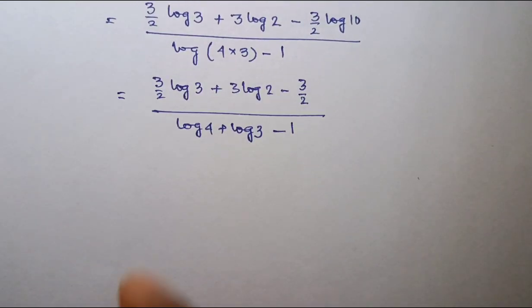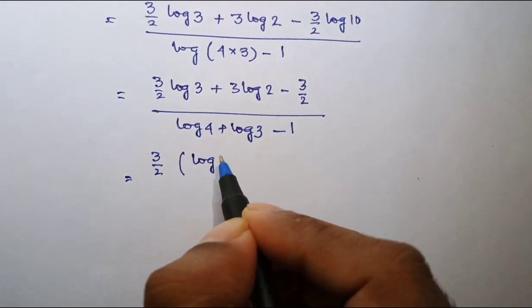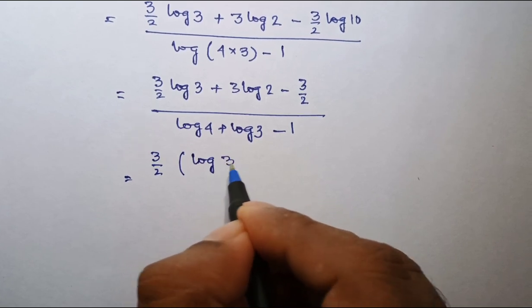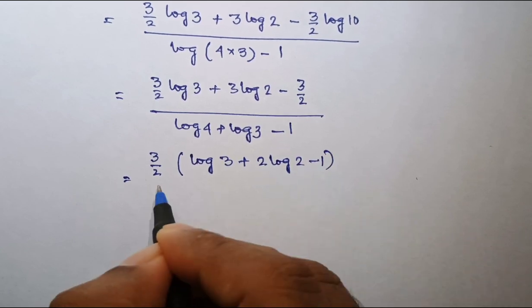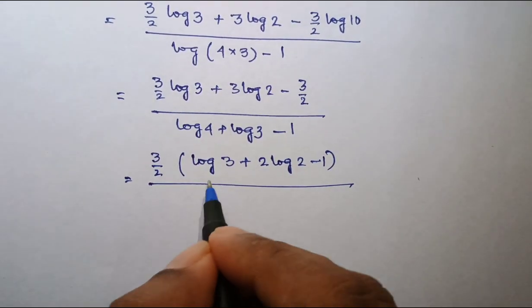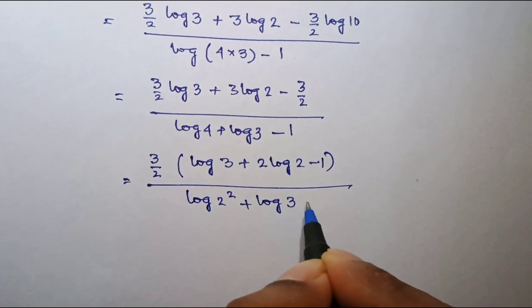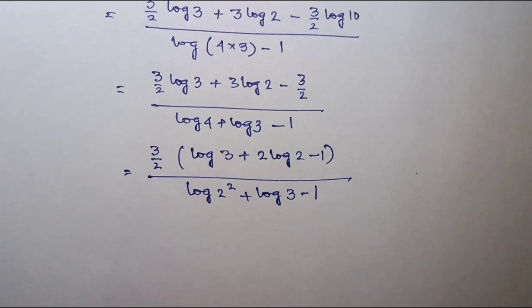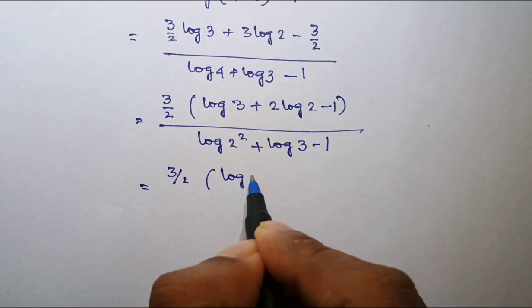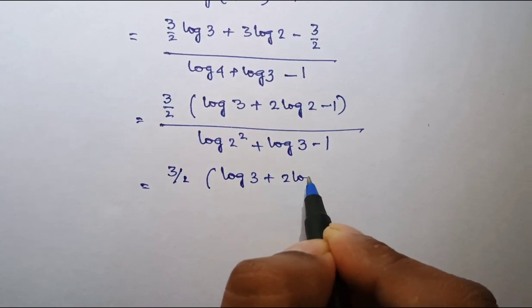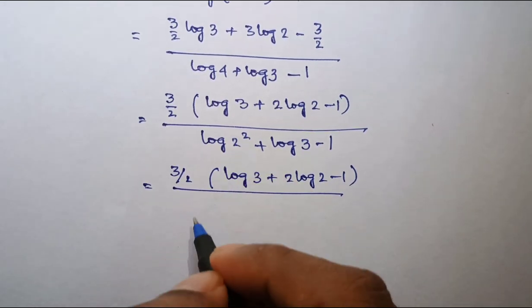So if I take 3 by 2 common from the numerator, I get log 3 plus 2 log 2 minus 1 in the numerator. In the denominator, I am writing log 4 as log of 2 square plus log 3 minus 1. So the expression becomes 3 by 2 into log 3 plus 2 log 2 minus 1, whole divided by 2 log 2 plus log 3 minus 1.